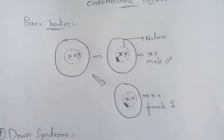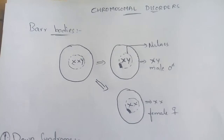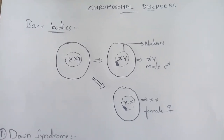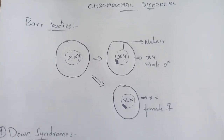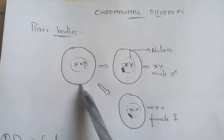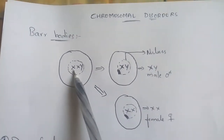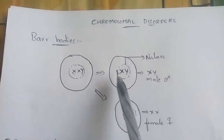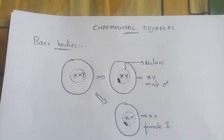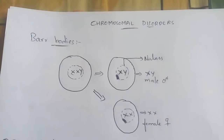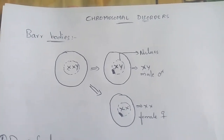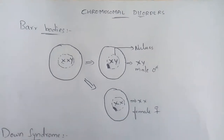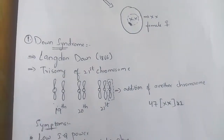A Barr body can be defined as one of the X chromosomes of the cell of a female individual that gets highly condensed. In a female individual, one of the X chromosomes will be suppressed — it will be condensed and inactivated. This is known as a Barr body and it can be seen at the interphase stage. Now let us talk about Down syndrome.